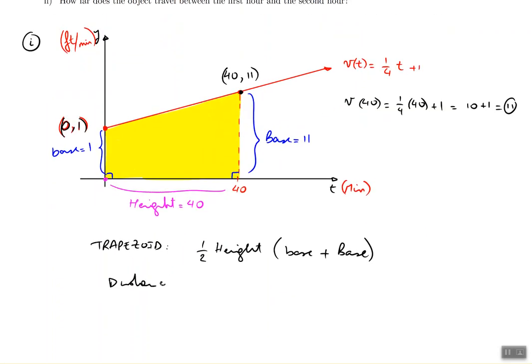So let's plug in all the numbers to get the distance. So the distance in this case is going to be 1/2 times the height, which is 40, multiplied by the small base added to the large base. And in this case, the small base is 1, the large base is 11. So calculators can do this very easily. So 220, and this is in feet. So the solution is 220 feet. For part one, we're done.